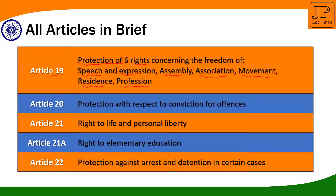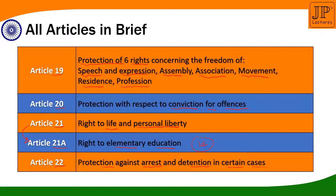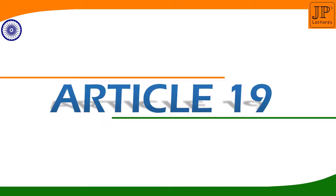Article 20 deals with the protection with respect to conviction for offenses. Article 21 deals with the right to life and the personal liberty. There is an amendment and one more thing added in Article 21 which is known as Article 21A. It deals with elementary education, which states that every person who is below 14 has the right to education. And Article 22 shows the protection against arrest and detention in certain cases. Let us start with Article 19, the right to have certain freedoms.